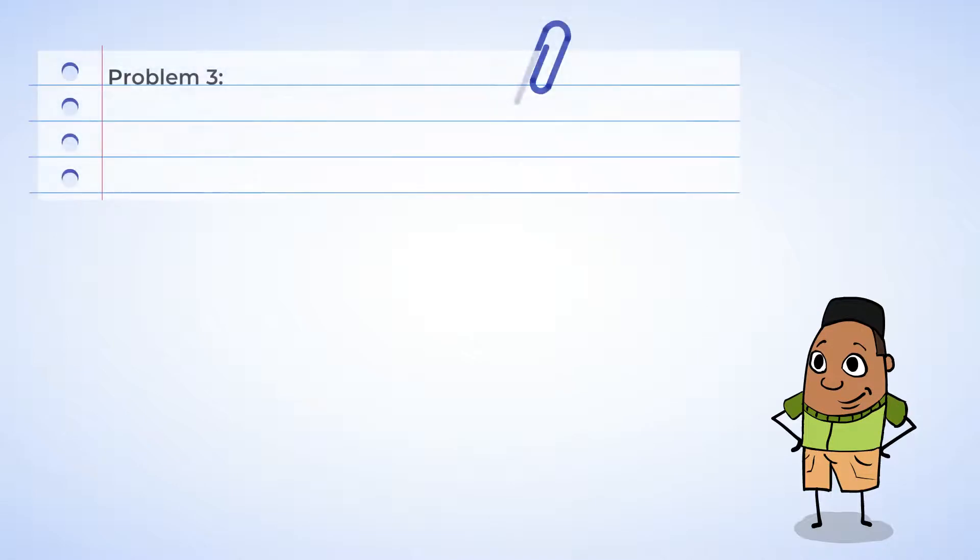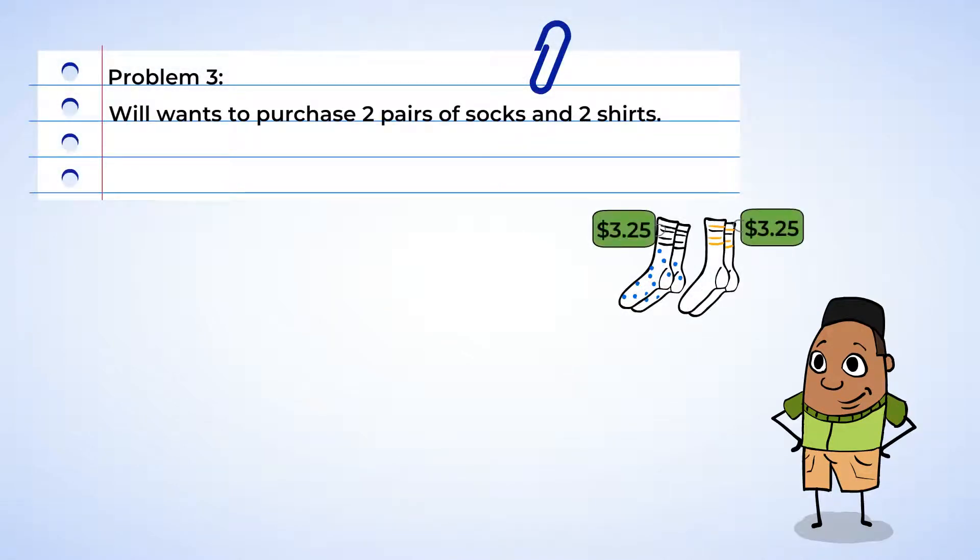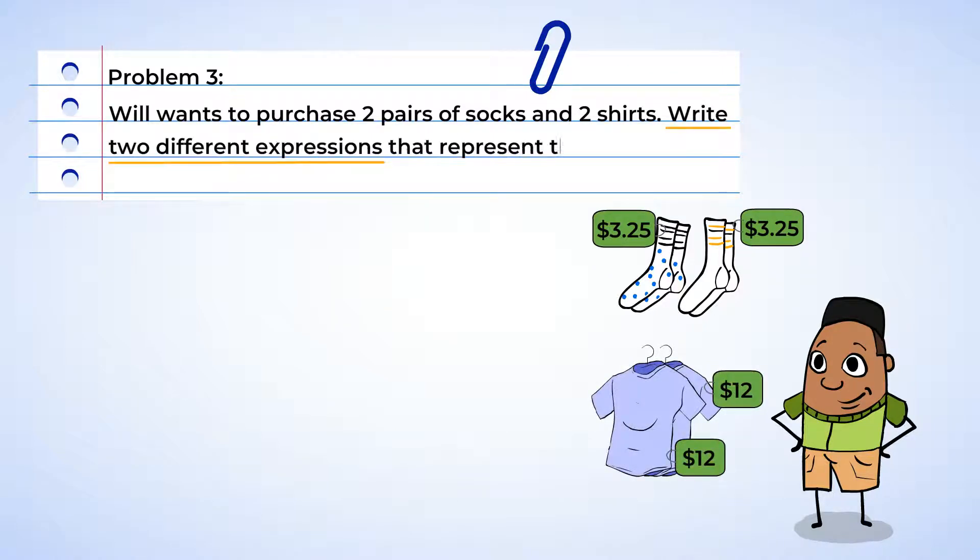All right, now, Will wants to purchase two pairs of socks for $3.25 each, and two shirts for $12. Write two different expressions that represent the total amount that Will is going to spend on the items. What is the total amount he will spend? Oh, we can totally help with this.